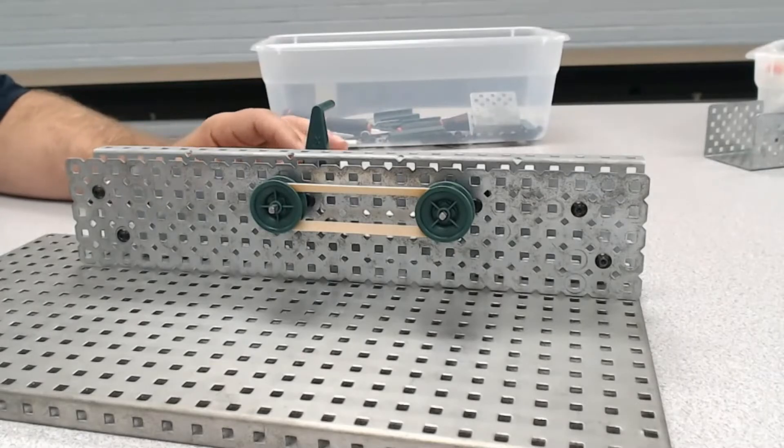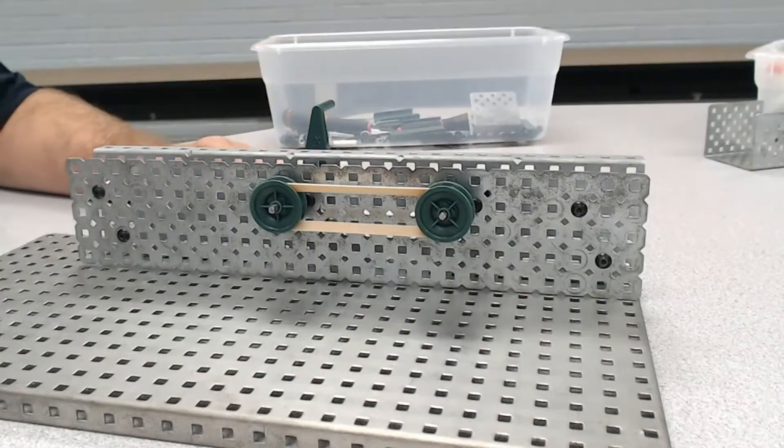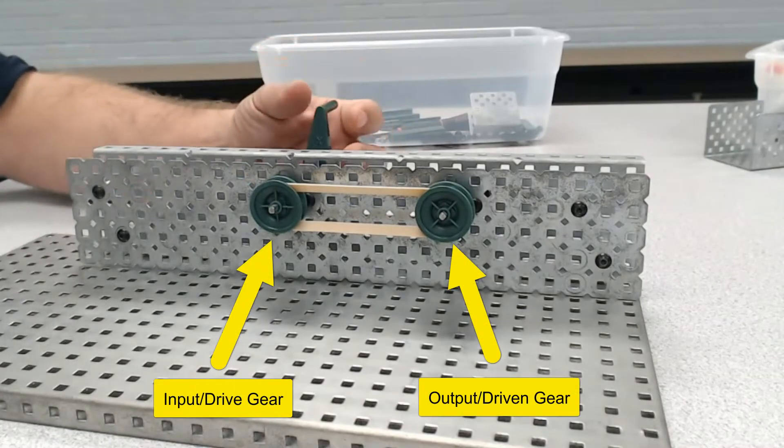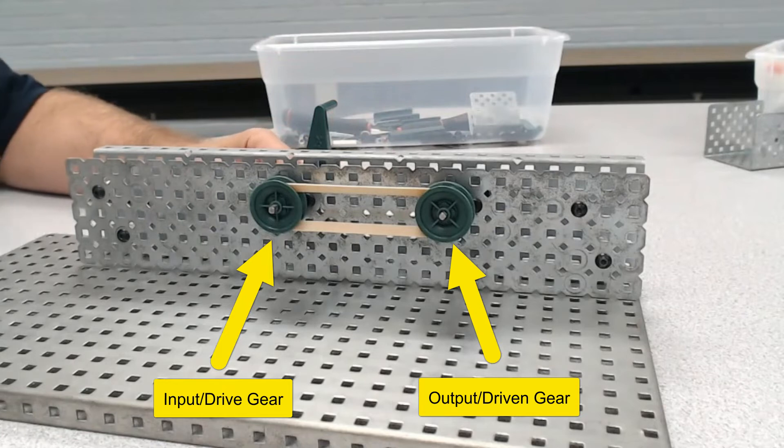First things first, we want to identify our input and output. Based on what you see, which gear do you feel is going to be the input gear? If you're identifying this as the input, you would be correct because the handle is attached to that particular drive shaft.